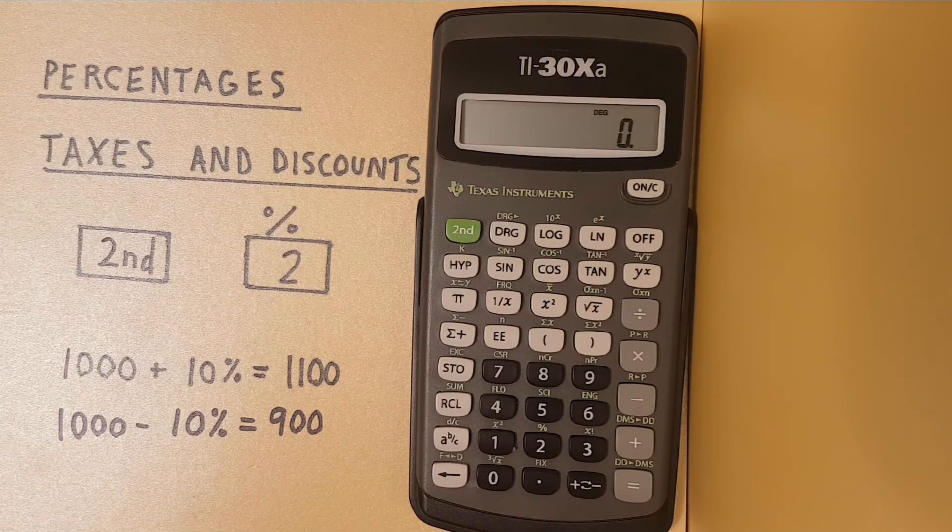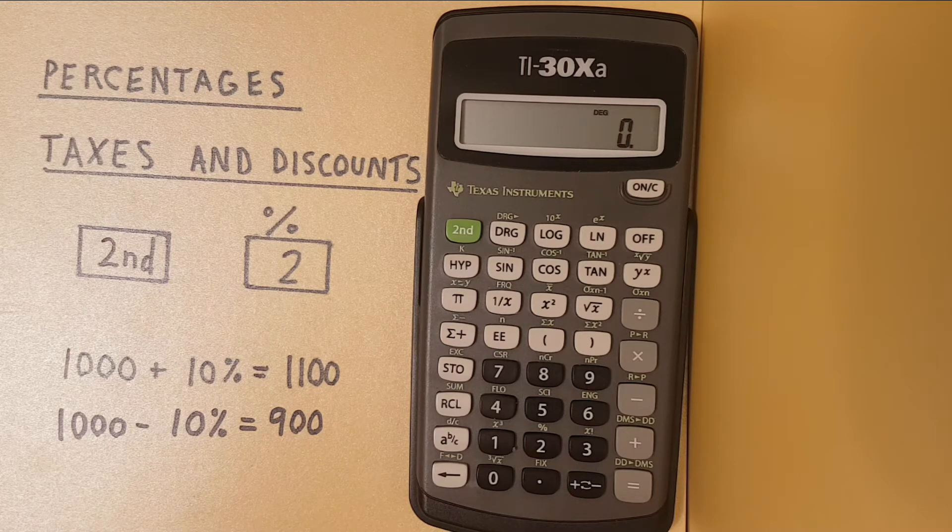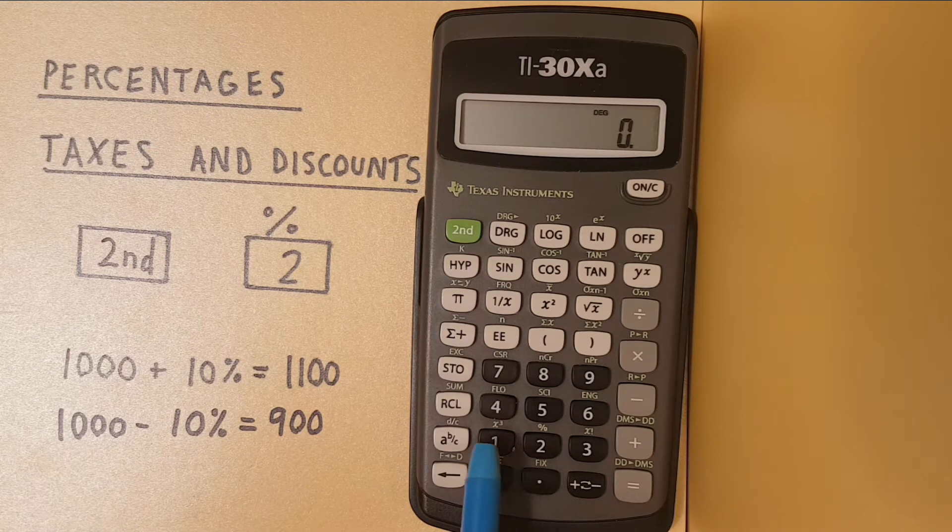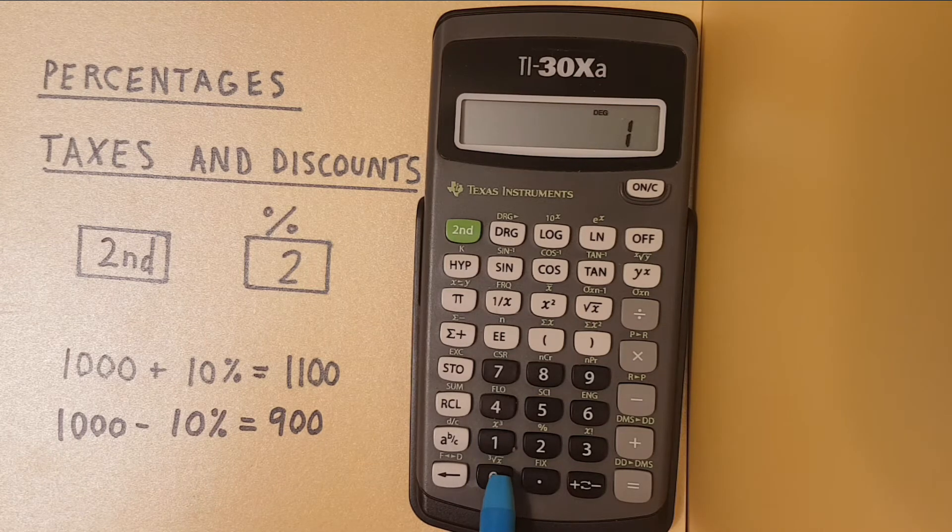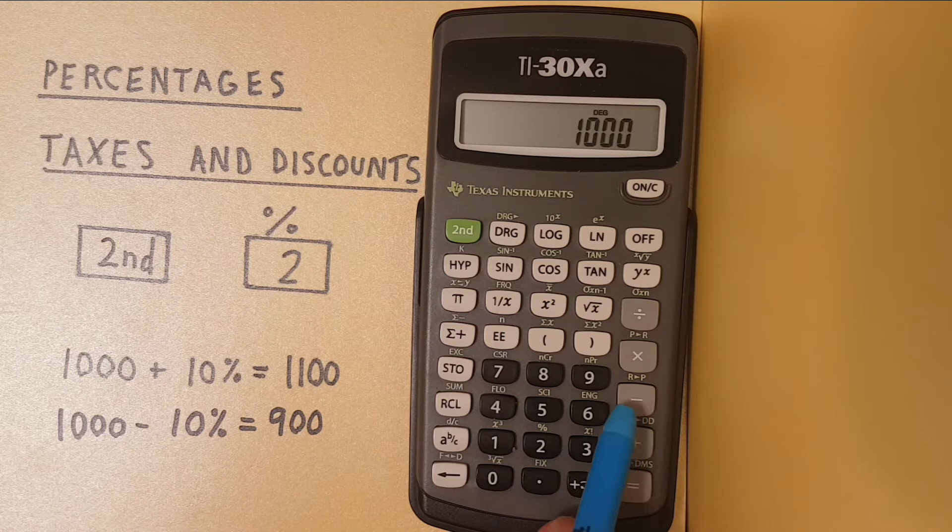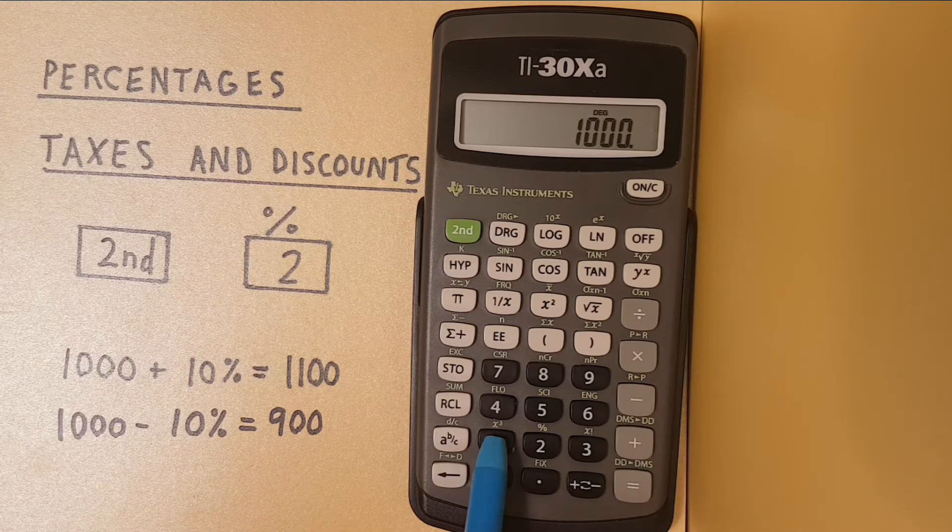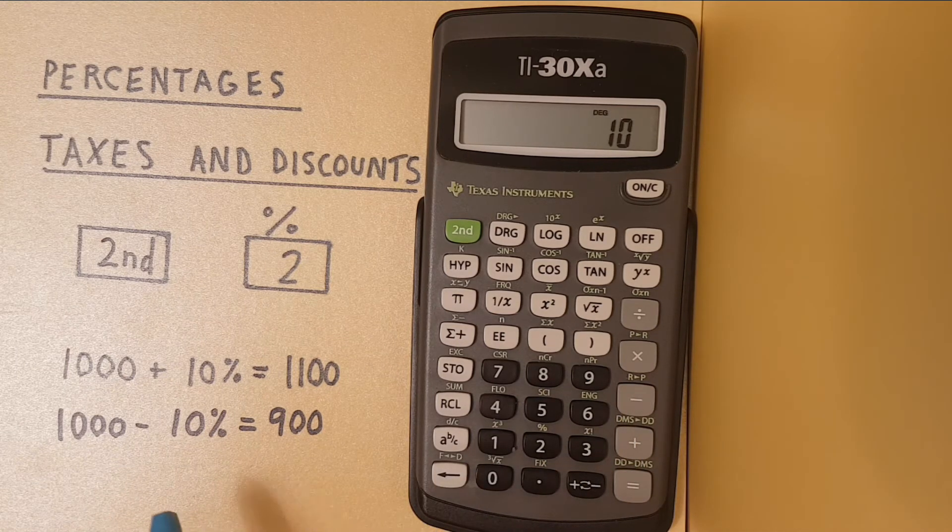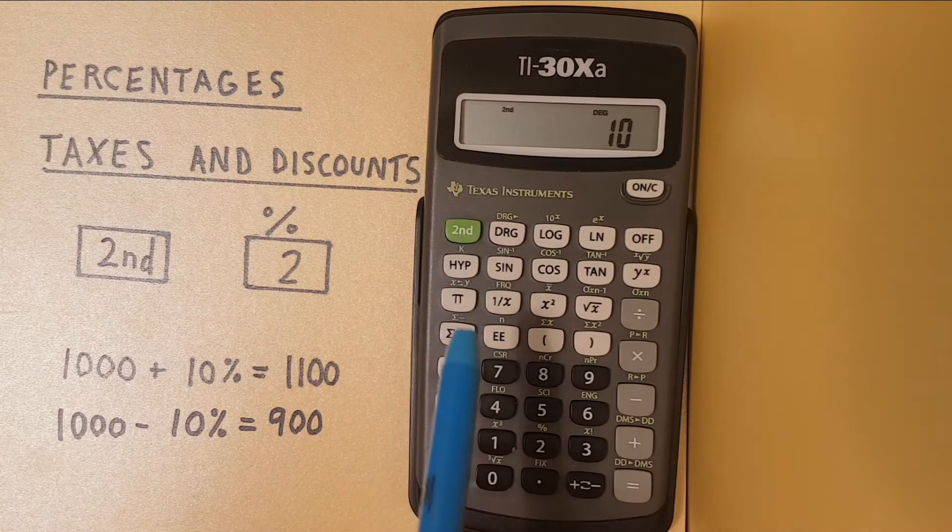What if we had an item whose final price was $1,000 but was discounted by 10%? We start by entering the 1,000 and this time we go minus 10 and then second function 2.